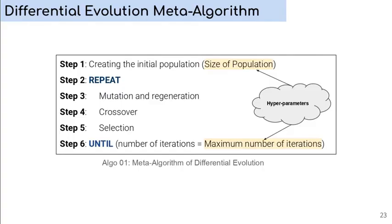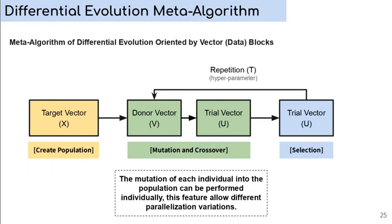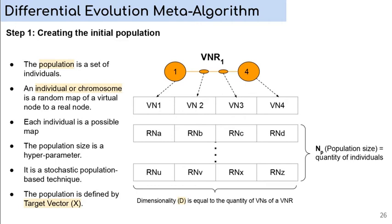This red block is where the sequential code is parallelized. In this figure, we can see the three vectors used in the differential evolution. An important point is that the mutation of each individual into the population can be performed individually. This feature allows different parallelization methods. The population is a set of individuals. An individual or chromosome is a random map of a virtual node to a real node. Each individual is a possible map. The population size is a hyperparameter. It is a stochastic population-based technique.